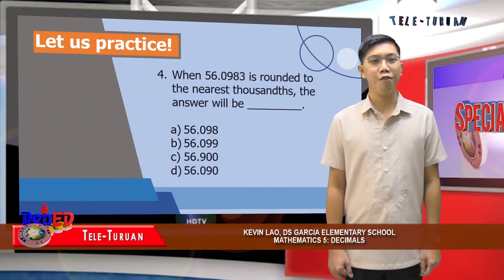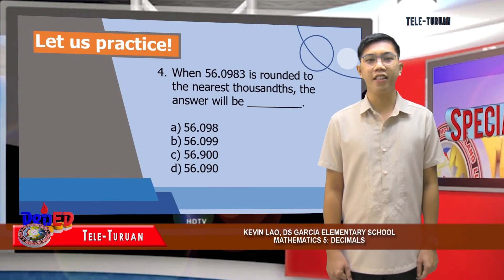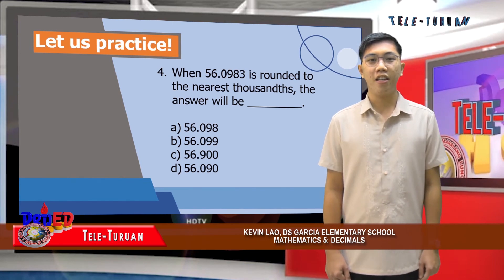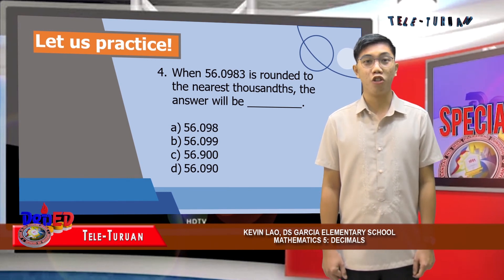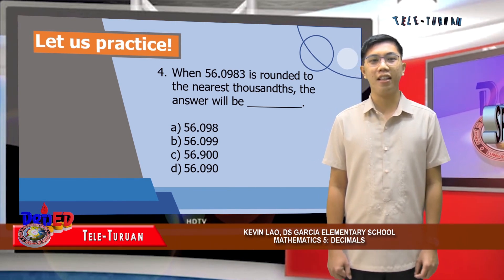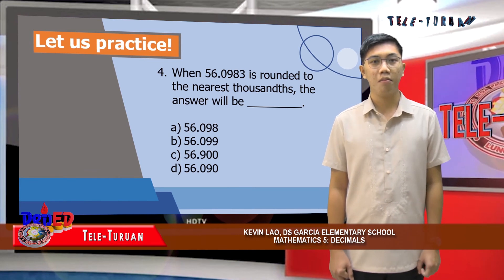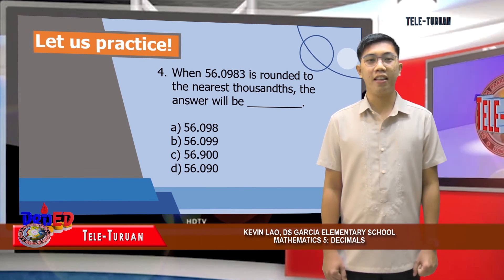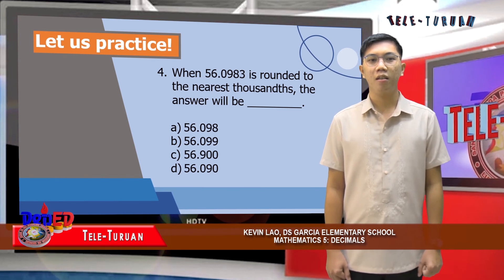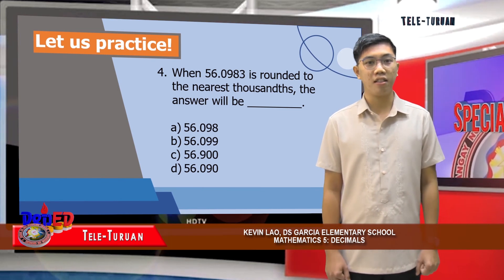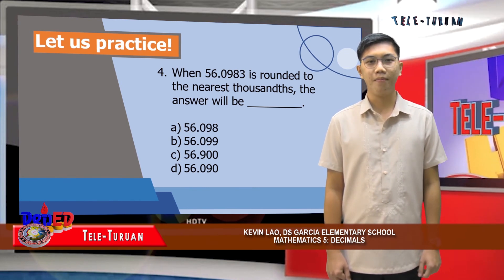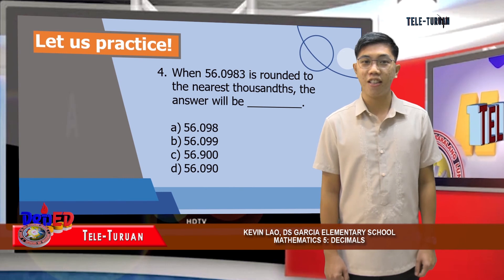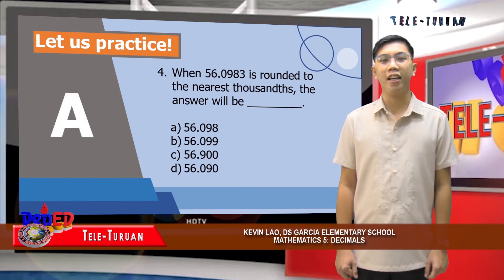That's awesome! For number four, when 56 and 983 ten-thousandths is rounded to the nearest thousandths, the answer will be blank. The choices are A, fifty-six and ninety-eight thousandths; B, fifty-six and ninety-nine thousandths; C, fifty-six and nine hundred thousandths; or D, fifty-six and ninety thousandths. The correct answer is A, fifty-six and ninety-eight thousandths. That's great!